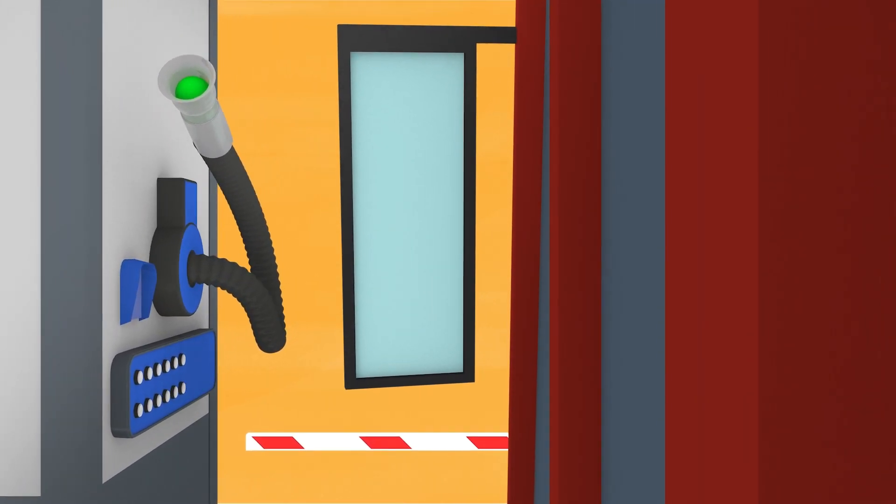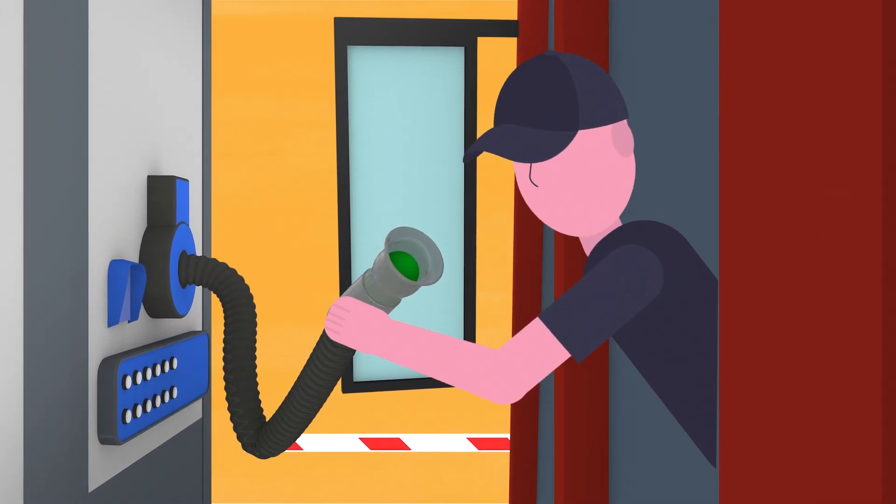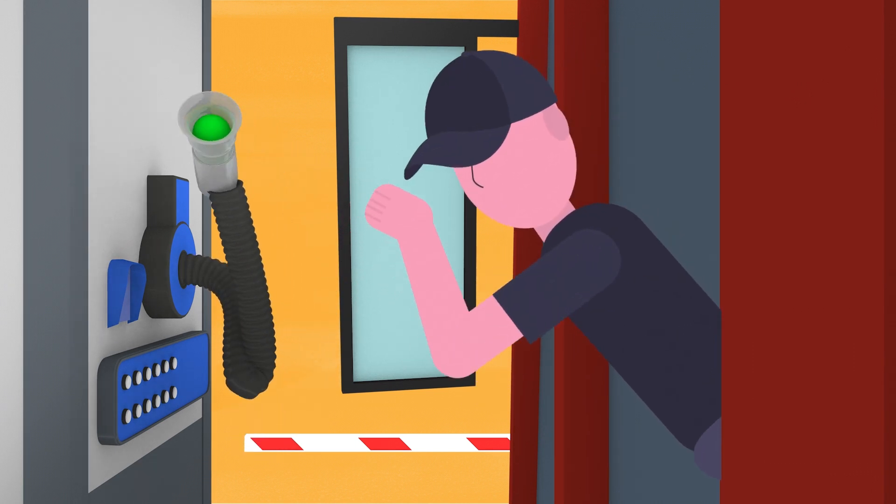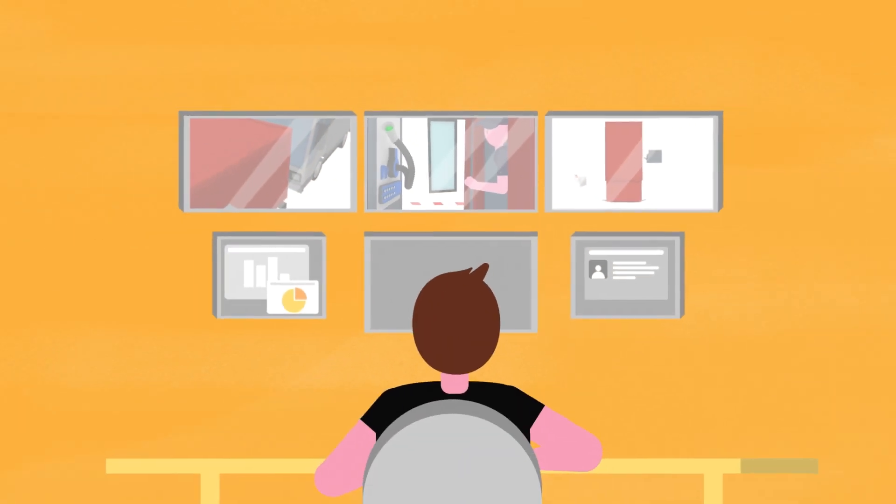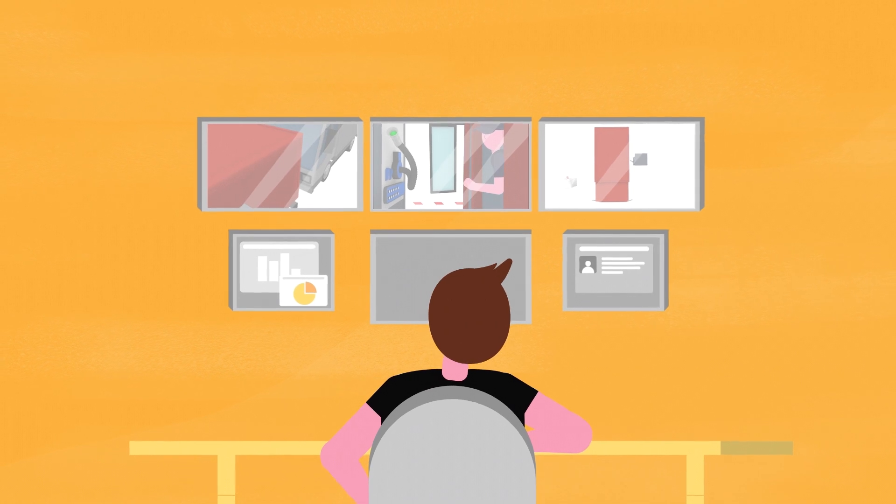Drivers arriving after a ferry journey need to blow into a tube to check if they are over the limit. If they are, the barrier remains closed and the police are called.